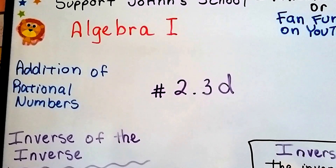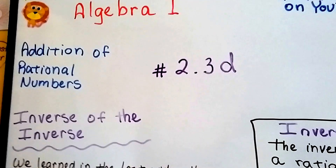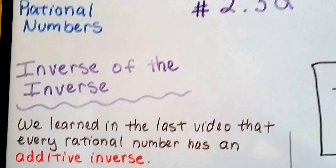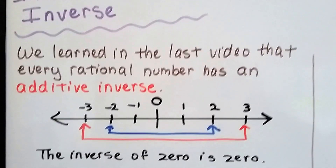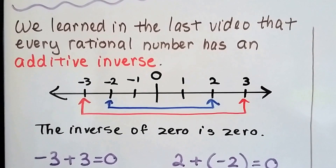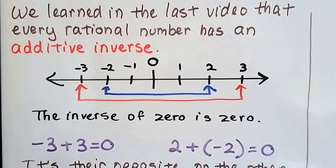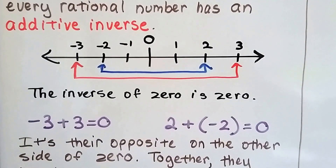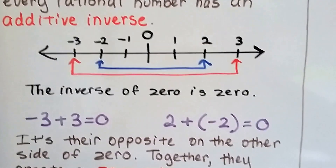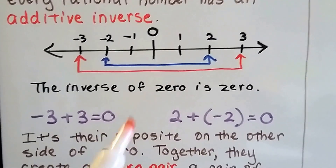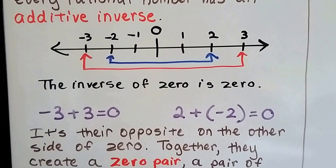Algebra 1, number 2.3d. We're talking about addition of rational numbers, and now we're going to talk about the inverse of an inverse. We learned in the last video that every rational number has an additive inverse. The inverse of 0 is 0 because it doesn't have an opposite to itself — it's right in the middle of the number line.